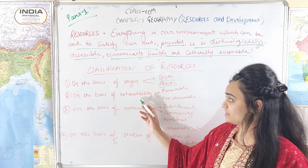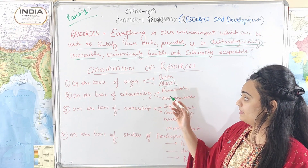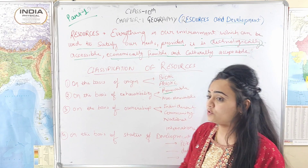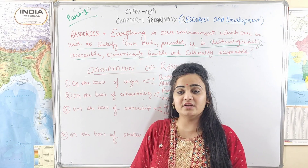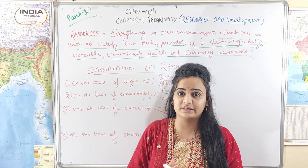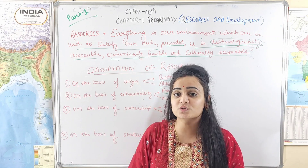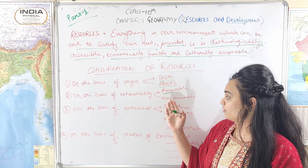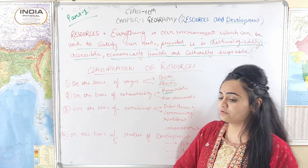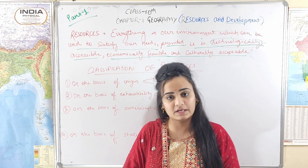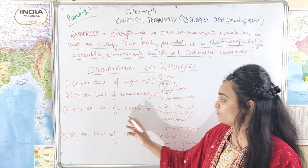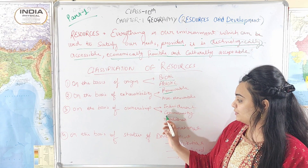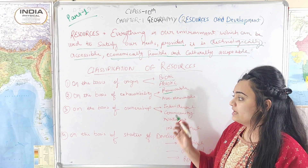On the basis of exhaustibility: renewable and non-renewable. On the basis of ownership: individual, community, national, and international.